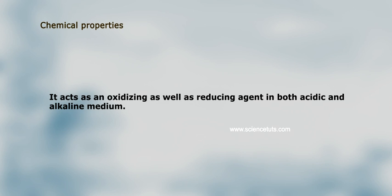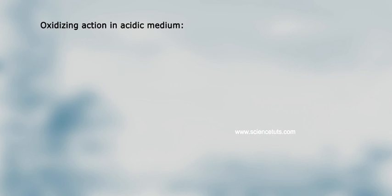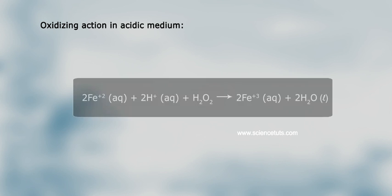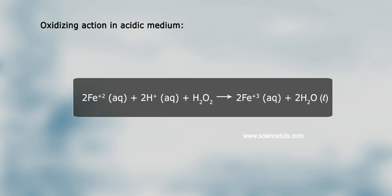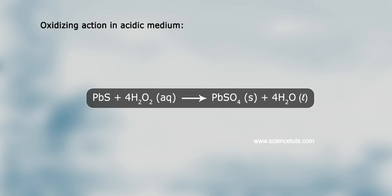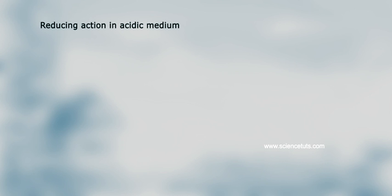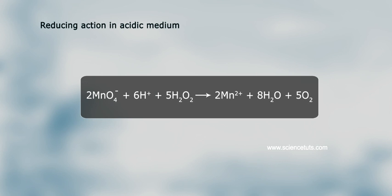H₂O₂ acts as both an oxidizing and reducing agent in acidic and alkaline media. Oxidizing action in acidic medium: 2Fe²⁺ (aq) + 2H⁺ (aq) + H₂O₂ gives 2Fe³⁺ (aq) + 2H₂O. Also, PbS + 4H₂O₂ (aq) gives PbSO₄ (solid) + 4H₂O.